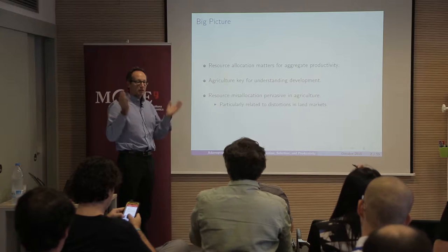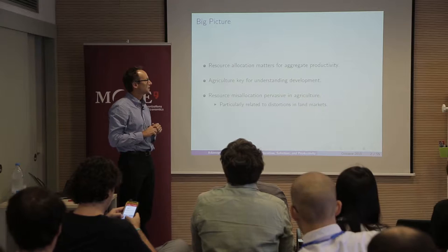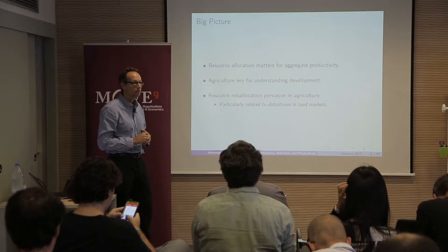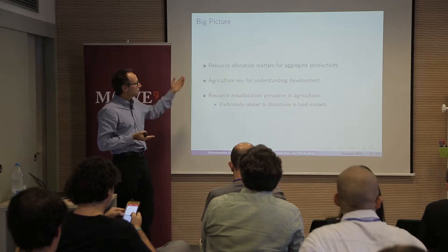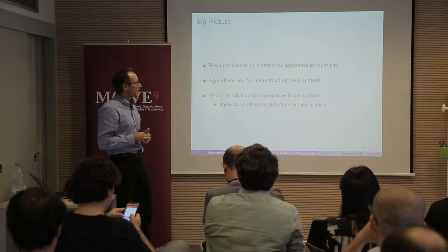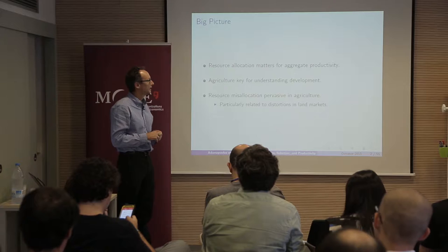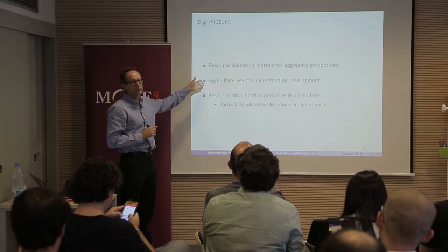Let me give you a rough picture of where this paper fits. The paper is about understanding the large income differences across countries, and there are two very broad literatures that have emphasized on the one hand the importance of the allocation of factors across heterogeneous production units to generate aggregate impact, and also the literature on the importance of agriculture for development.